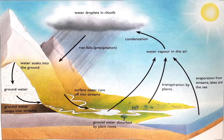Evaporation occurs in streams, lakes, and the sea from the heat of the sun. The water vapor is in the air, then transfers as water droplets in the clouds through condensation. When the rain falls, it becomes precipitation, and then the water soaks into the ground again and goes into the streams, and the whole process repeats.